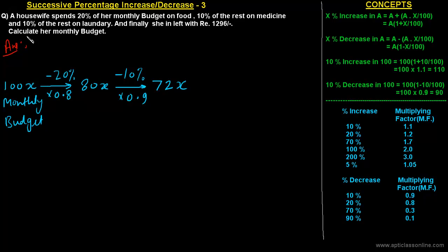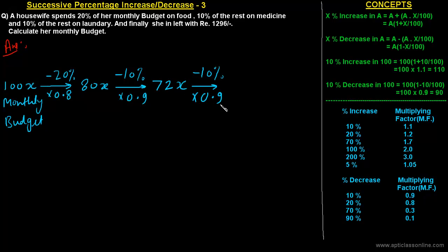Now she is left with 72x. It is given that 10% of the rest is spent on laundry. Again she spends 10% on laundry, so whatever she is left with can be had by multiplying this value by 0.9.